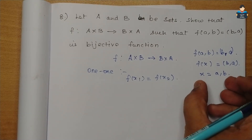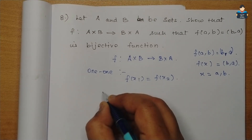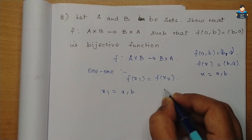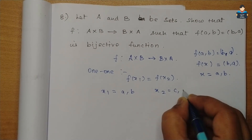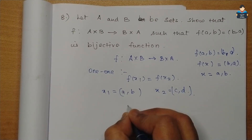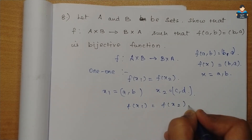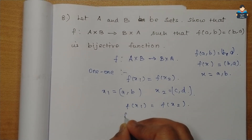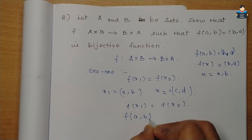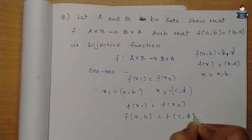Let x1 = (a, b) and x2 = (c, d). Then f(x1) = f(x2) means f(a, b) = f(c, d).